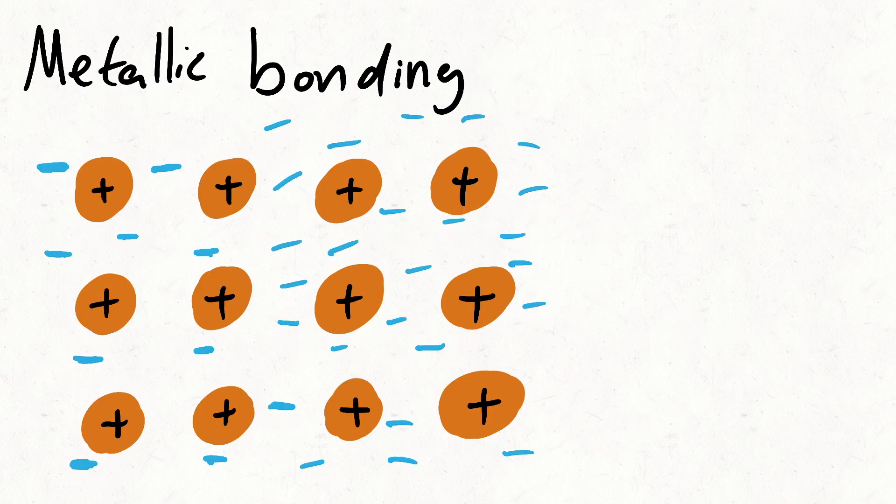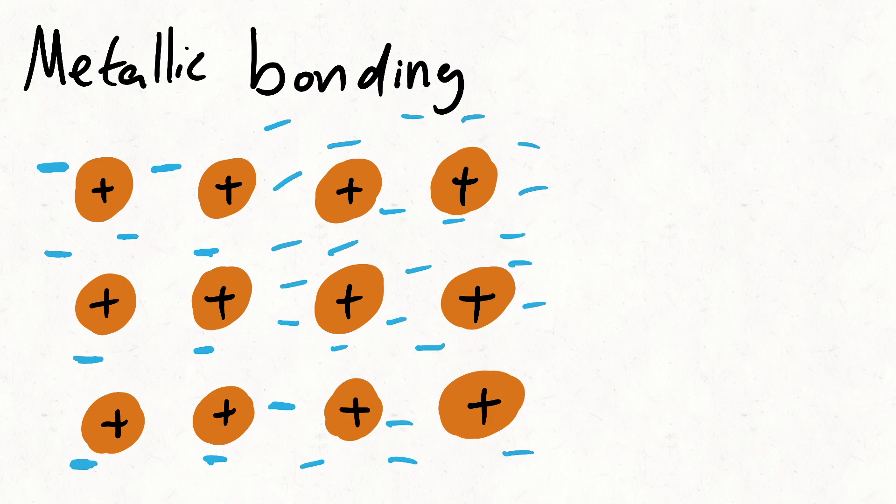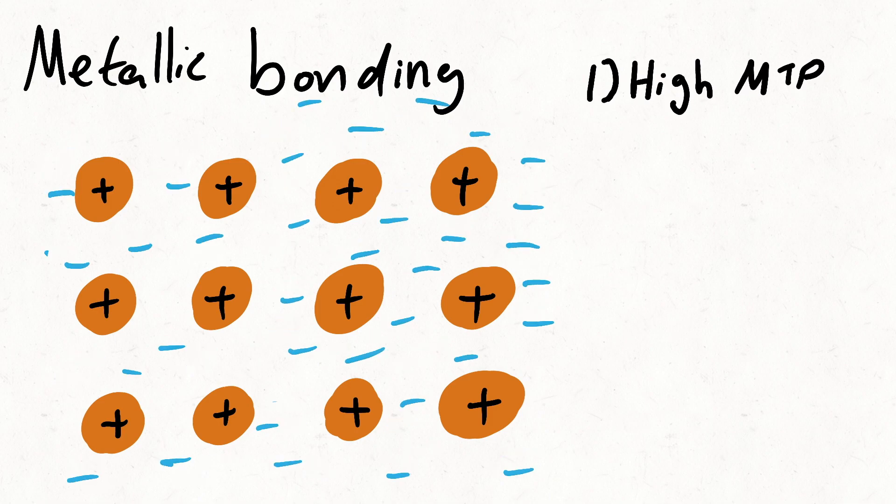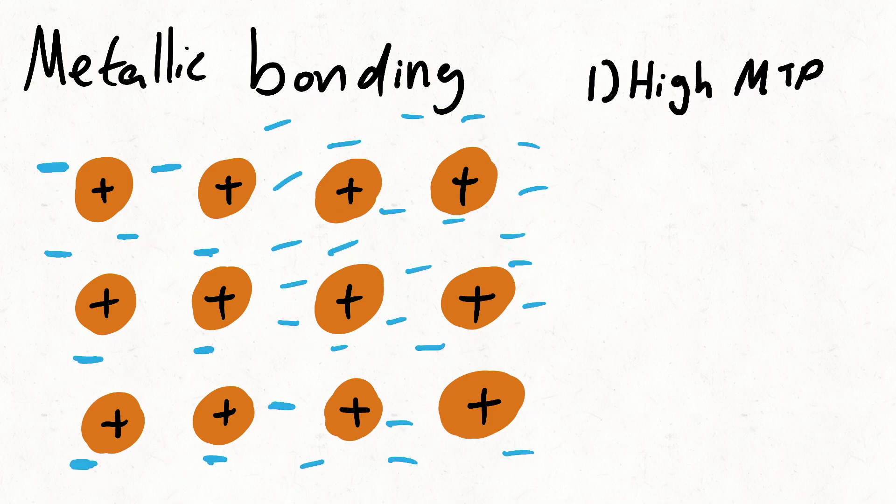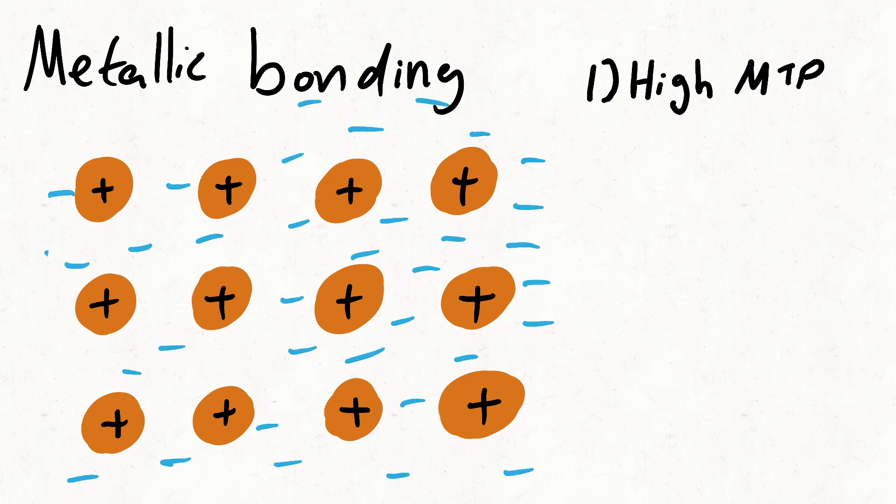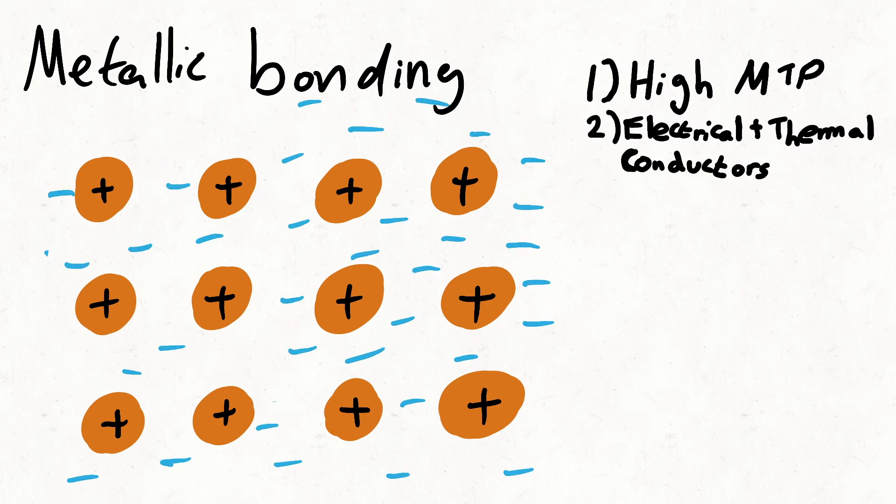In metallic bonding, there's a giant lattice of metal cations with a sea of delocalized electrons around them. Metals have high melting points as these electrostatic attractions between the cations and electrons are very strong, so a large amount of energy is needed to overcome this. Also, these free moving electrons make metals really good at conducting electricity and heat.